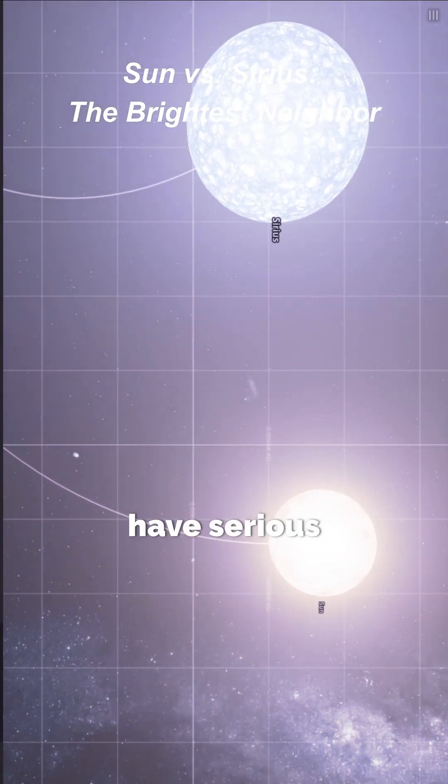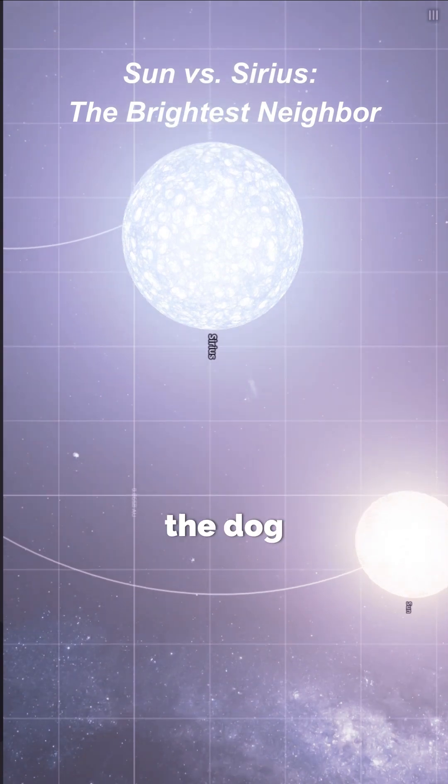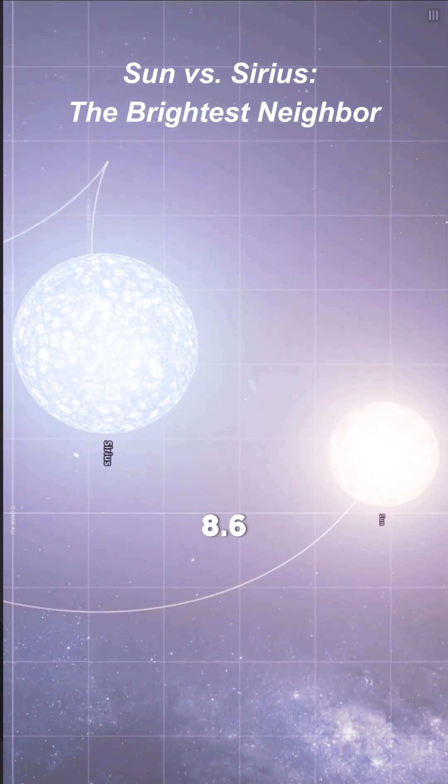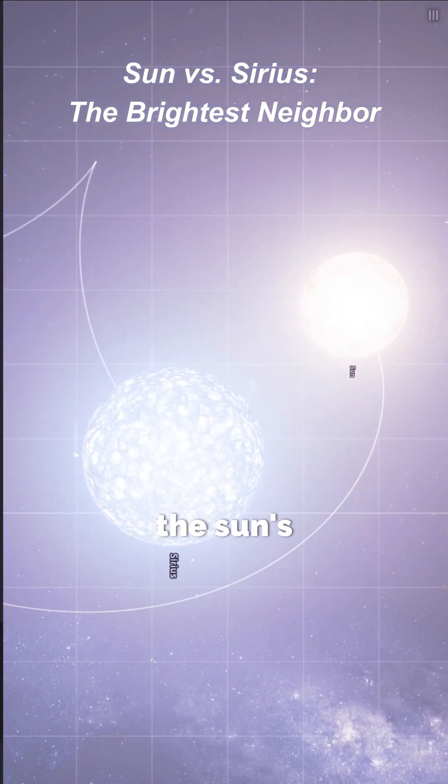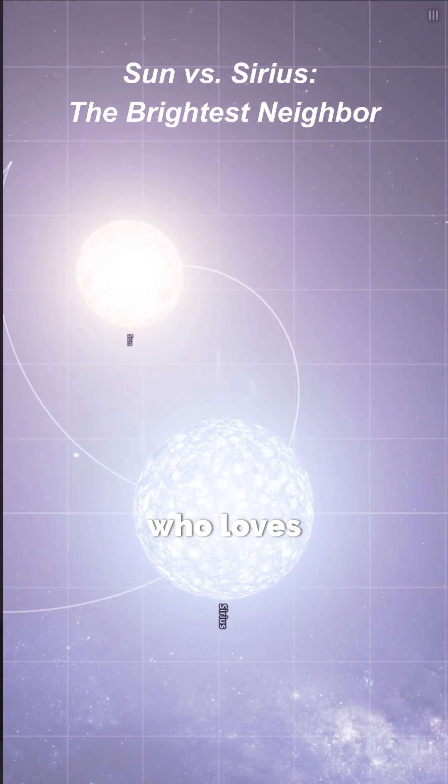And in the other corner, we have Sirius, aka the dog star. At just 8.6 light-years away, it's basically the Sun's flashy next-door neighbor who loves to show off.